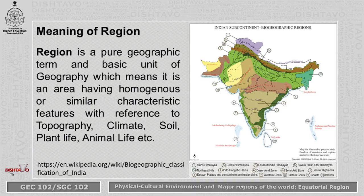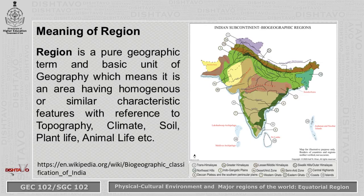Look at this map of the subcontinent of India. You can find different geographic divisions or different regions. For example, this part is the Western Ghats. Adjacent to the Western Ghats are the coastal regions, or the West Coast region. It is called the West Coast region because the soil, climate, culture, and language of the people are the same. When you find similarity in all these things, we draw a boundary and call it a region — an area having homogeneous or similar characteristic features.